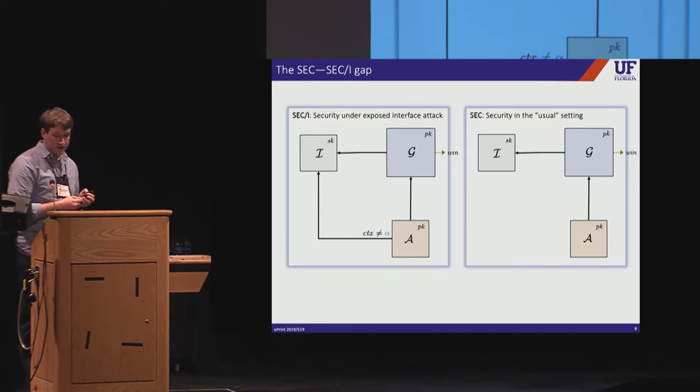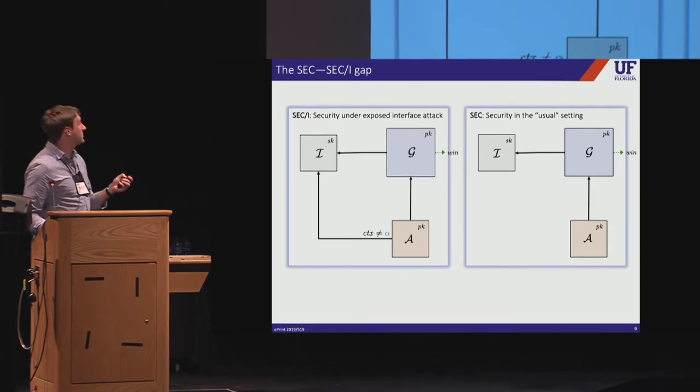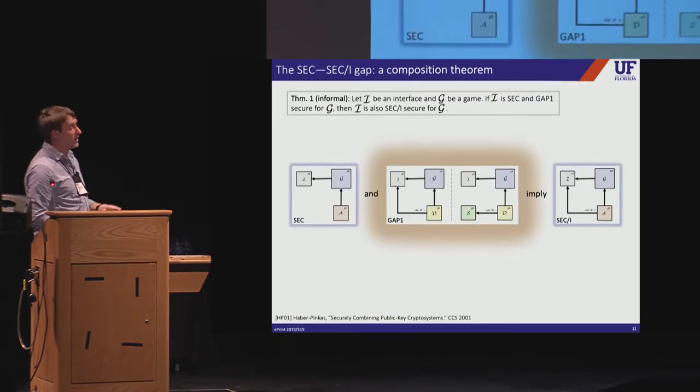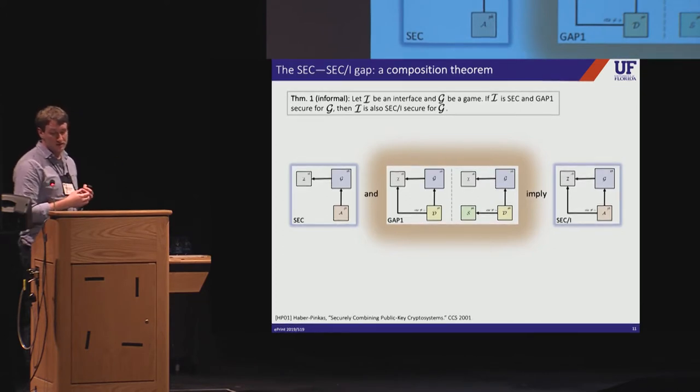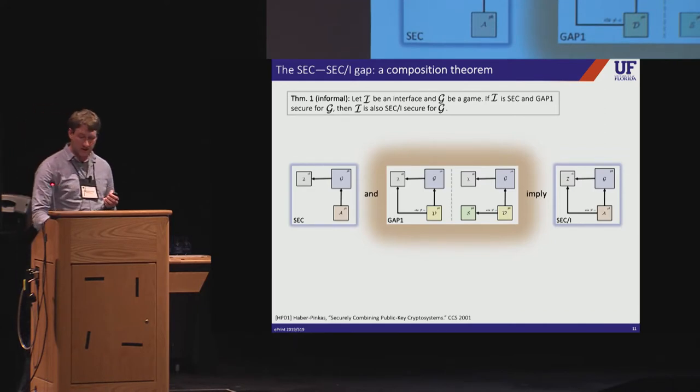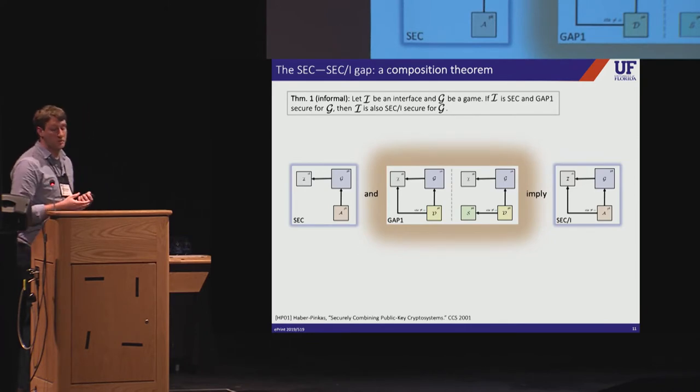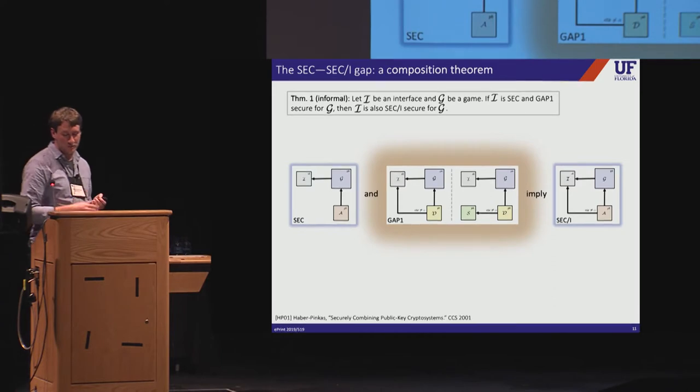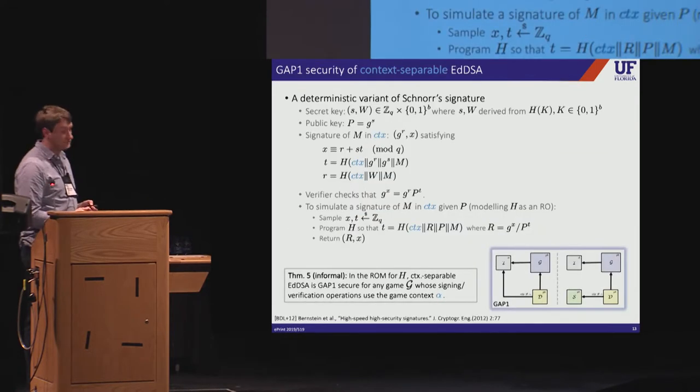So here's the informal statement of our main result. If an interface I and game G are GAP1 secure, and G is secure in the usual setting, then G is also secure under exposed interface attack. So basically, to rule out exposed interface attacks, it suffices to prove the interface and game are GAP1 secure.